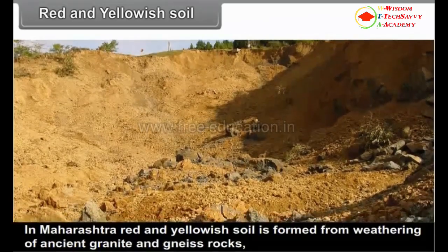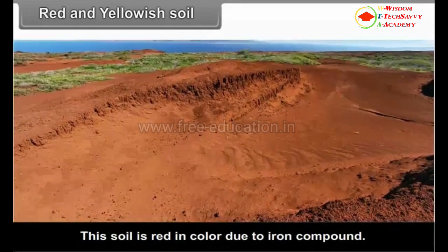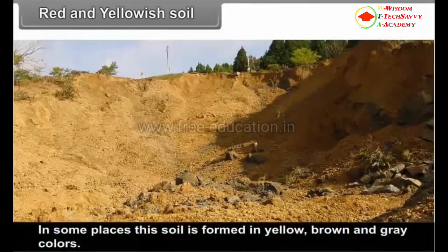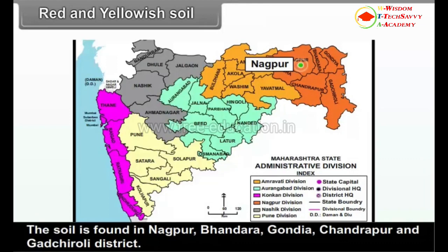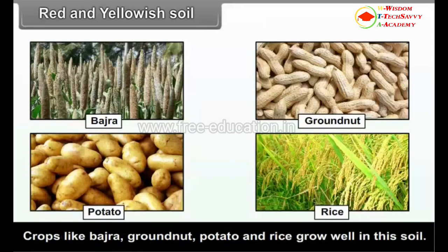Red and Yellowish Soil: In Maharashtra, red and yellowish soil is formed from weathering of ancient granite and gneiss rocks. This soil is red in color due to iron compounds. In some places, it is also found in yellow, brown and gray colors. The soil lacks phosphoric acid, organic matter, lime and nitrogen. It is found in Nagpur, Bhandara, Gondiya, Chandrapur and Gadchiroli districts. Crops like bajra, groundnut, potato and rice grow well in this soil.